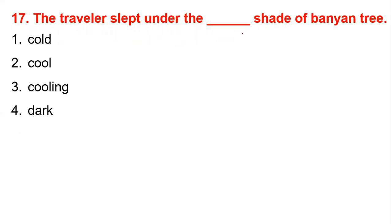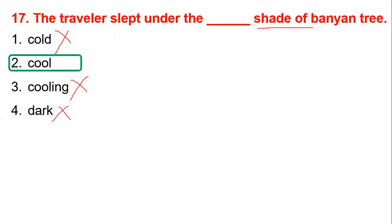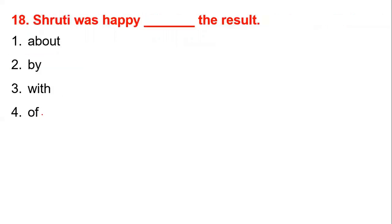Number 17: the travelers slept under the dash of a banana tree. The correct word is shade — like cool shade. So the answer is shade. Number 18: Truthy was happy — the result. The correct preposition is with. Happy with the result is the correct answer.